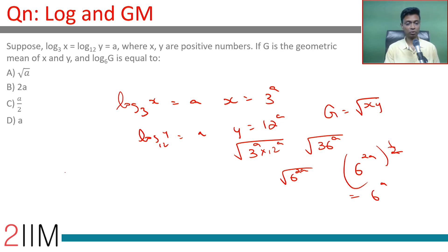So the geometric mean is 6 power a. Log G to the base 6 would be a.